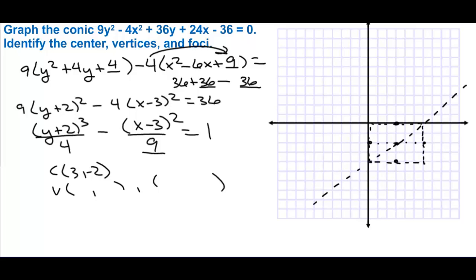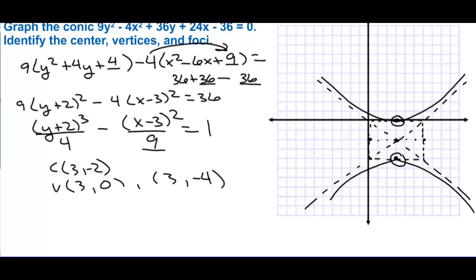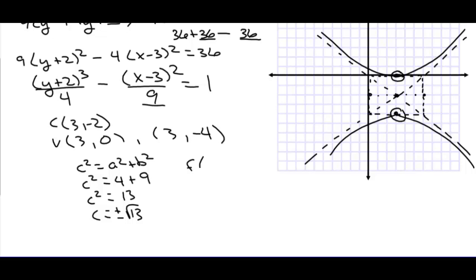We draw the asymptotes, and since y is first, this is a vertical hyperbola going up and down. The vertices are (3, 0) and (3, negative 4). For focal points: c squared equals a squared plus b squared, so c squared equals 4 plus 9 equals 13, giving c equals plus or minus square root of 13. The focal points are at x equals 3, and their y-coordinates are negative 2 plus or minus the square root of 13.